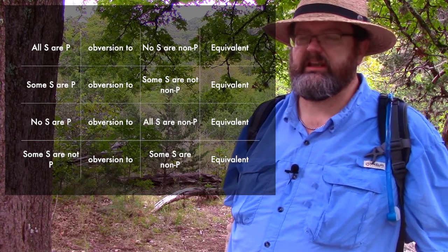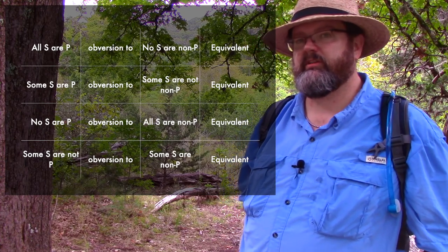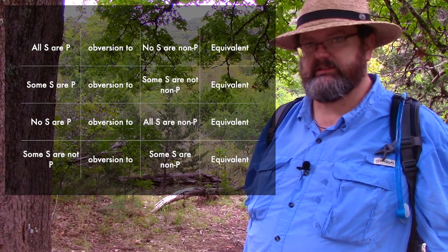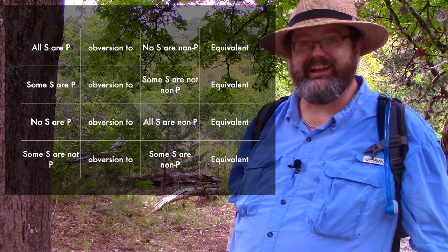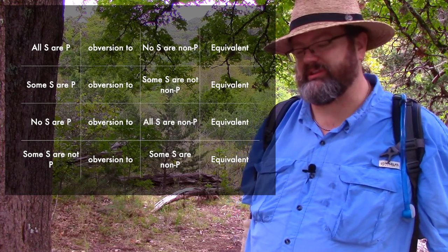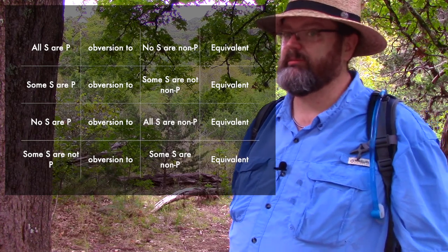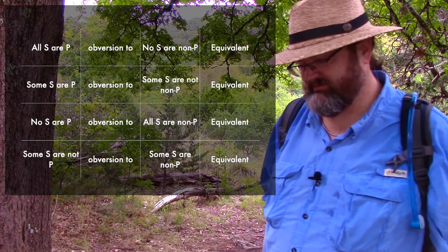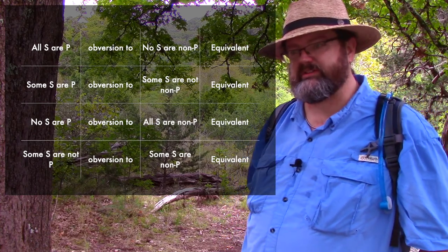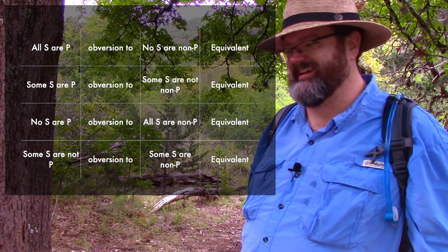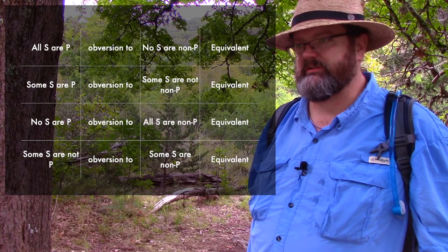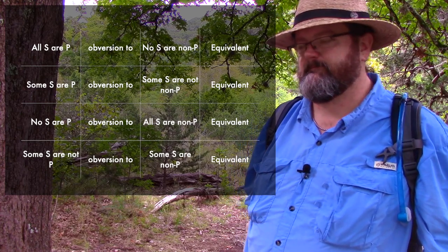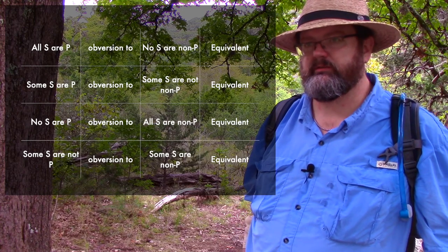Every obversion is deductively valid. If you'd like to try to disprove that, you're welcome to try to find a counterexample — but it can't be done. To recap: obversion means leave the quantifier alone, leave the subject alone, flip the copula to its opposite, and use the complement category for the predicate.